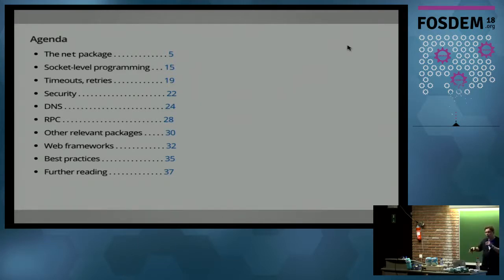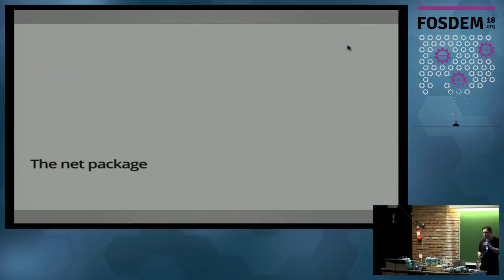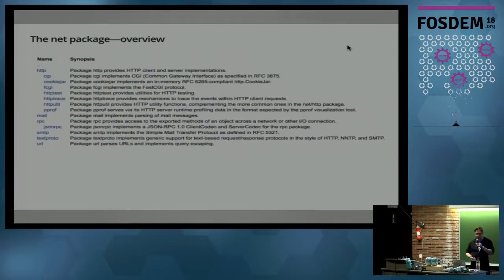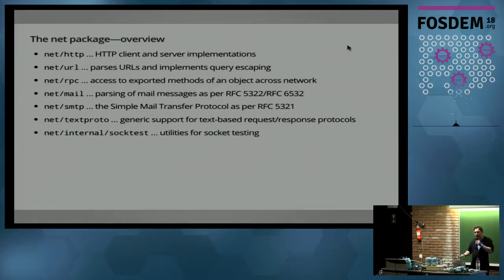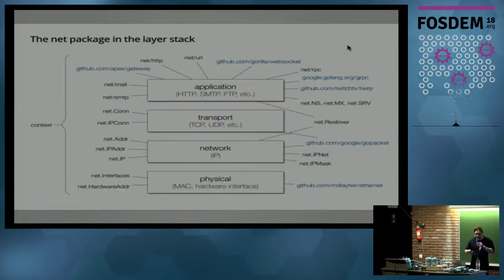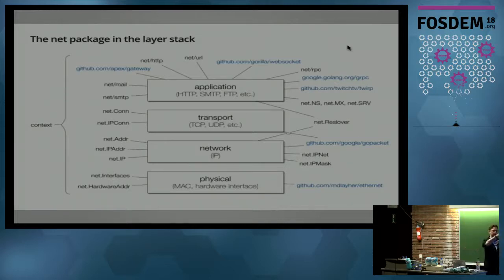The net package — the TL;DR of this talk is essentially how awesome Go is because it brings so many things already in the standard library and has awesome packages for everything else. This is a high-level overview of the net package. There are things you'd expect: HTTP, URL, RPC, mail, SMTP, and so on. I tried to come up with a visualization that makes more sense if you're coming from a networking background. Who's comfortable looking at the network layer stack? Pretty much everybody — cool.